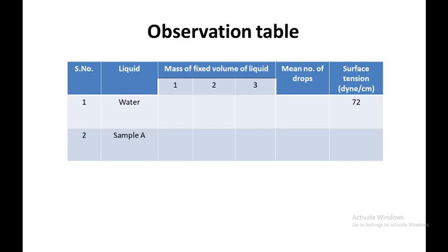For accuracy of the surface tension determination, we have to perform this experiment in triplicate. We have to measure the mass of a fixed volume of liquid three times — three times for water and three times for sample. Then calculate the mean weight of the sample as well as water.